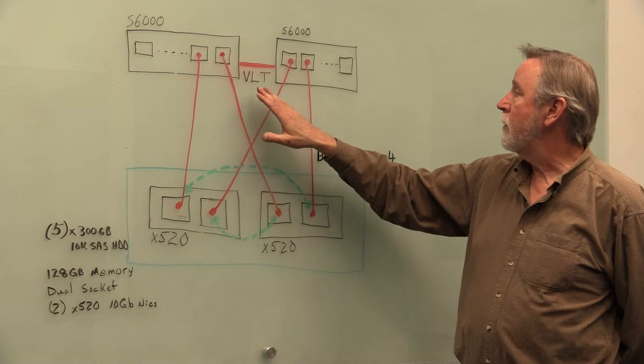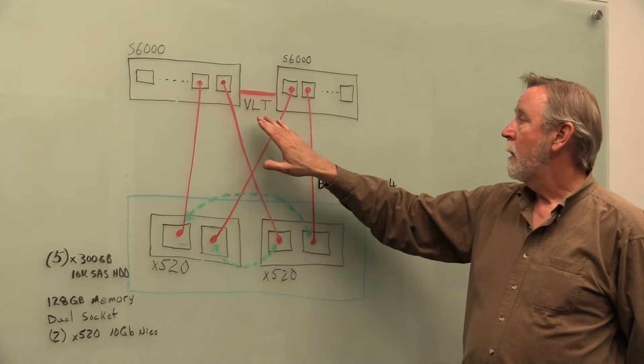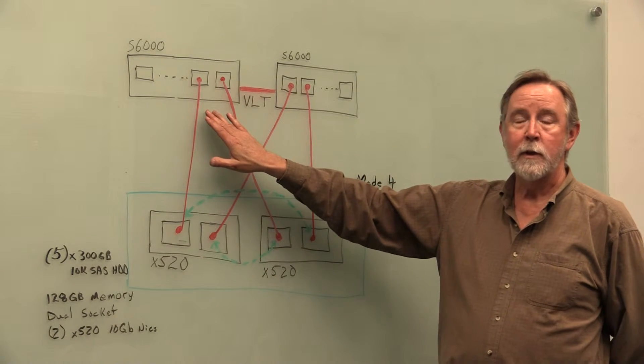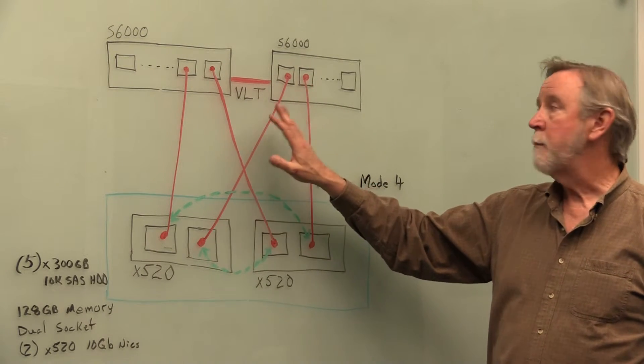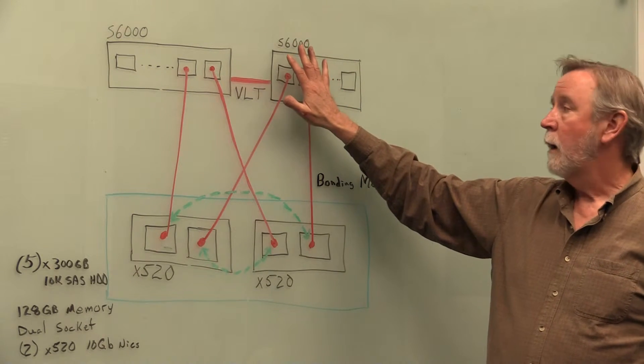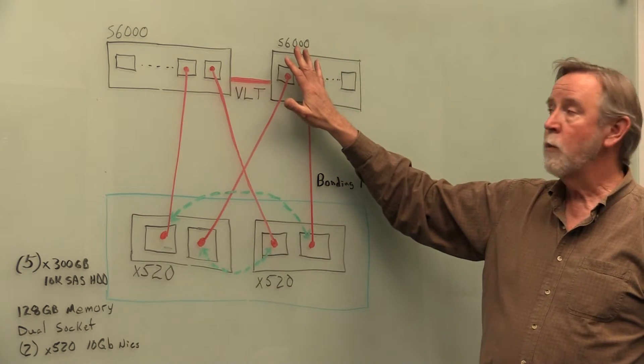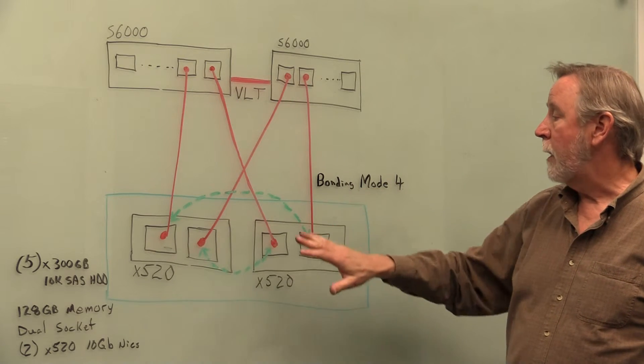The way we've got these cabled in up to our S6000s. First of all, I'll talk a little bit about our S6000s. We've got our S6000s set up with a VLT link between them. The VLT link allows us to run these S6000s in both a load balancing and a high availability mode. So if we lose one switch, these are our top of rack switches. So if we lose one switch, the other one will pick up and you won't ever go down.